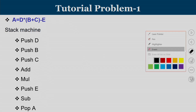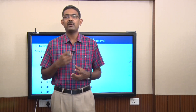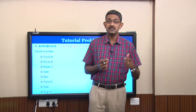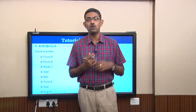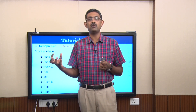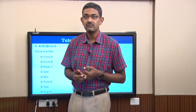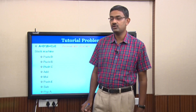Now we try to understand what the code looks like for an accumulator machine. In an accumulator machine, one operand is always the accumulator and the result is also stored in the accumulator. The second operand can be a memory location. LOAD X means the contents of memory location X are copied to the accumulator; STORE X means the contents of the accumulator are stored into memory location X. Here A, D, B, C, and E are all memory locations.